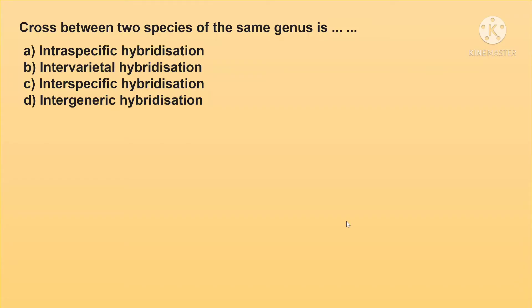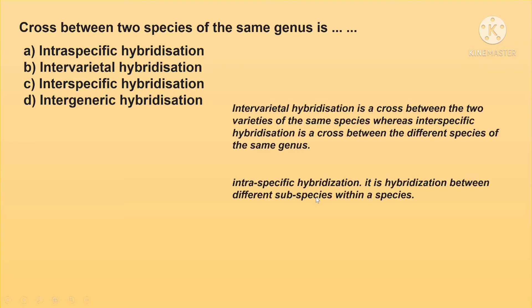A cross between 2 species of the same genus is: a. intraspecific hybridization, b. intervarial hybridization, c. interspecific hybridization, and d. intergeneric hybridization.